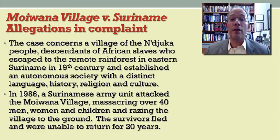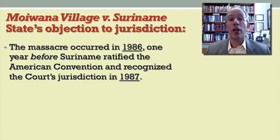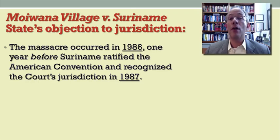The response of Suriname's government to the complaint was first to raise an objection to jurisdiction. The objection was essentially as follows: the massacre occurred in 1986, which was one year before Suriname had ratified the American Convention and recognized the jurisdiction of the Inter-American Court. So Suriname is essentially arguing that, putting to one side whether these allegations are true, they are outside the jurisdiction of the Inter-American Court. And there actually is some considerable authority in international law for Suriname's position.